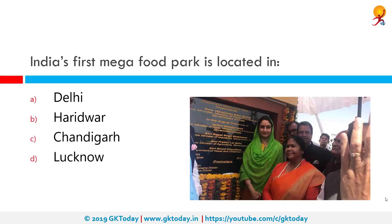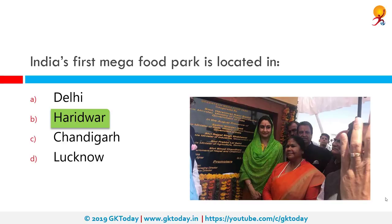India's first mega food park is located where? It is located in Haridwar. The government has sanctioned 42 mega food parks to be set up in the country under the mega food park scheme. The Forest Research Institute is located in Dehradun and is an institute of the Indian Council of Forestry Research and Education — a premier institution in forestry research. In 1991 it was declared a deemed university by the UGC.